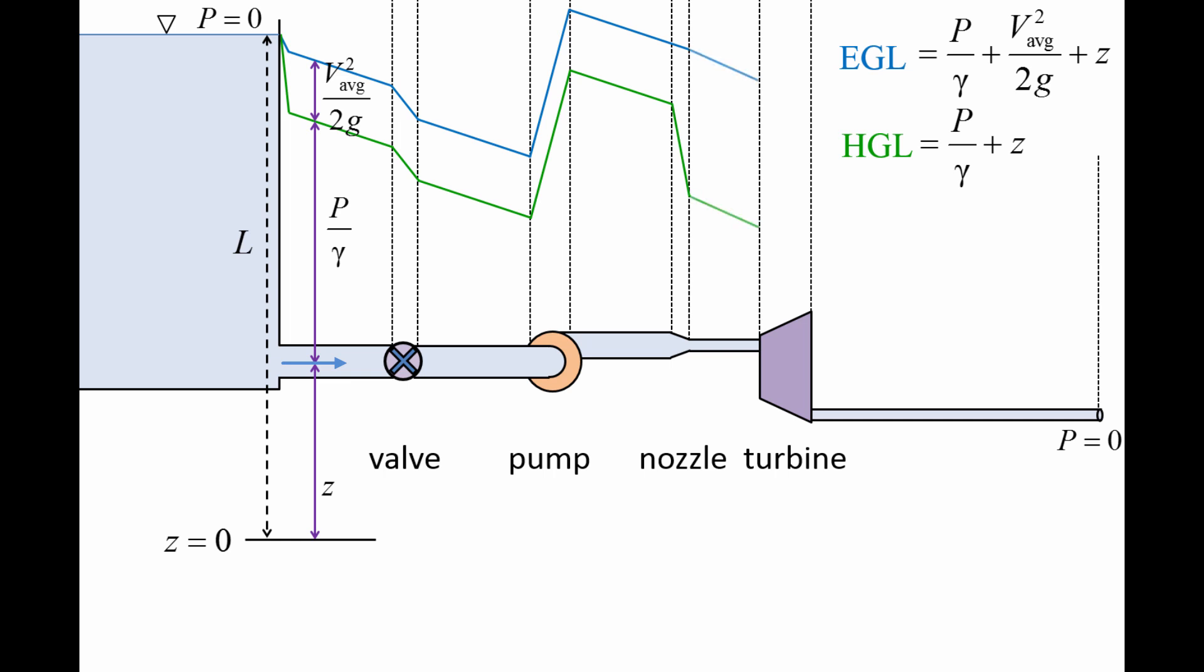Following the nozzle, the liquid travels through a smaller diameter pipe, resulting in a more rapid drop in pressure and steeper EGL and HGL curves.